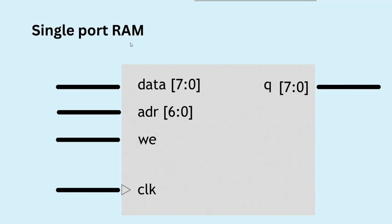The single port RAM is 128 by 8 bit, where 128 defines the number of locations and 8 bit defines the data at each location. The address input is 7 bits wide (2 raised to power 7 = 128), so the address bus is addr[6:0]. WE is the write enable — when high it enables the write operation, when low it enables the read operation. CLK is the clock signal, and Q is the 8-bit output data port.